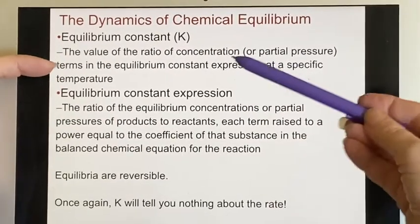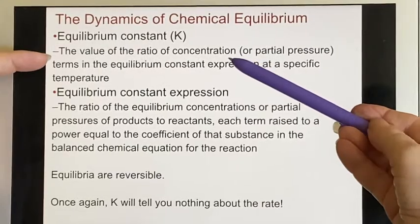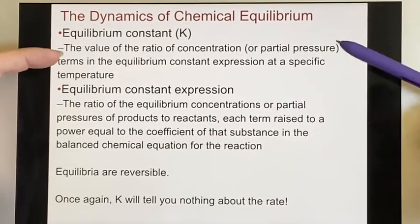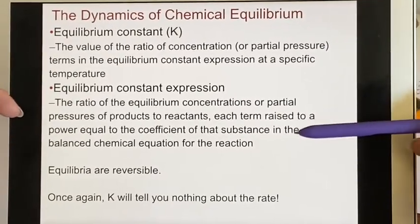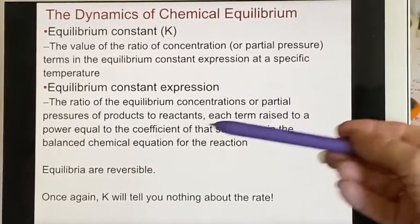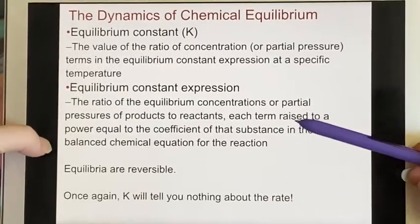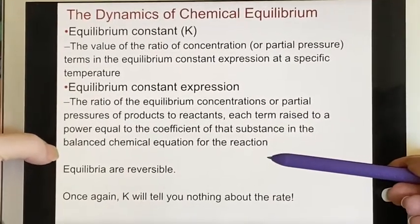Now it turns out that often we're working with things that are entirely gases. So we could also do this with a ratio of partial pressures. These ratios are going to have their terms raised to a power that's equal to the coefficient of the substance in the balanced chemical equation.